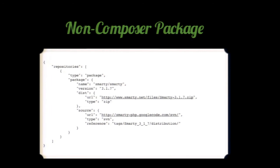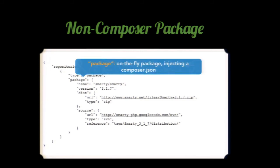If a package is not on Composer at all, you can use type 'package.' This lets you declare the package on the fly — providing name, version, and source right there in your composer.json. This can be SVN, Git, GitHub, whatever you want. Once you do that, you can easily require that package — for example, 'require smarty/smarty' — and Composer knows where to find it even though it has no composer.json and isn't in a Composer repository. This is very useful for packages not yet in Composer.